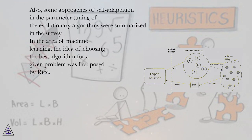Also, some approaches of self-adaptation in the parameter tuning of the evolutionary algorithms were summarized in the survey. In the area of machine learning, the idea of choosing the best algorithm for a given problem was first posed by Rice.